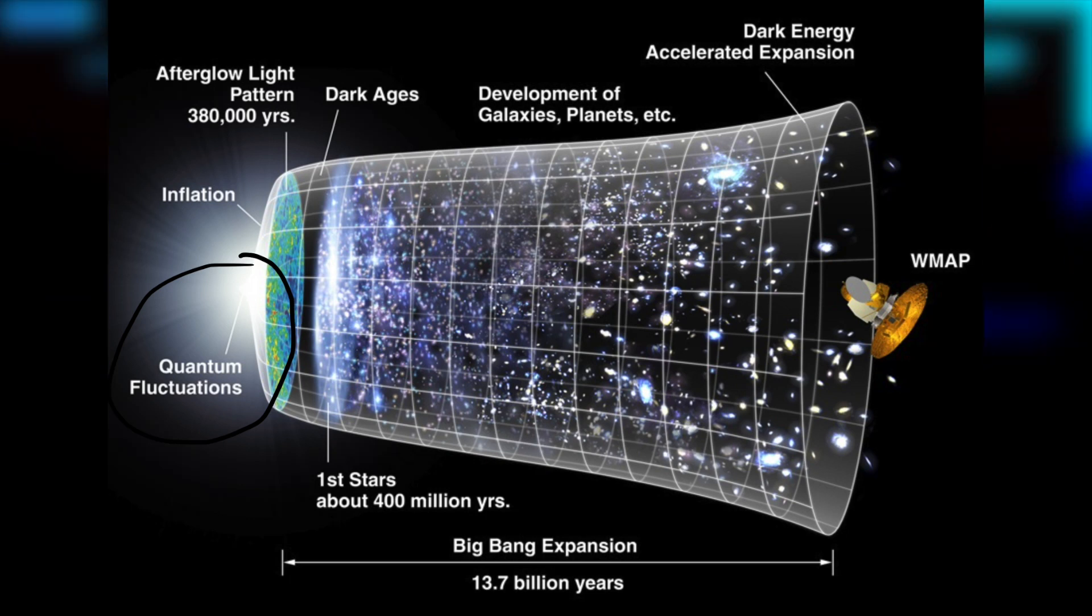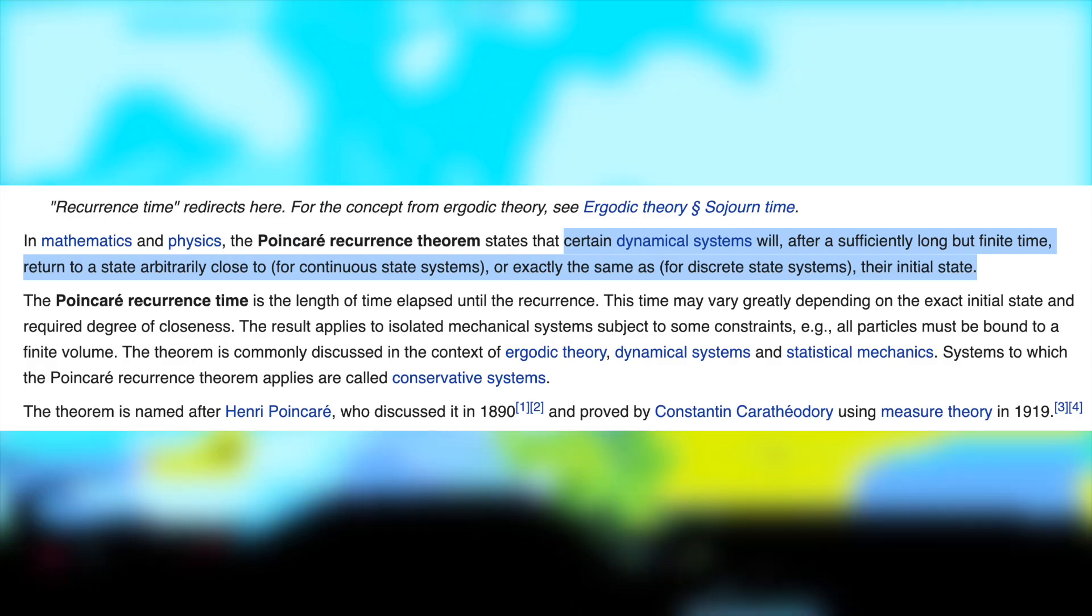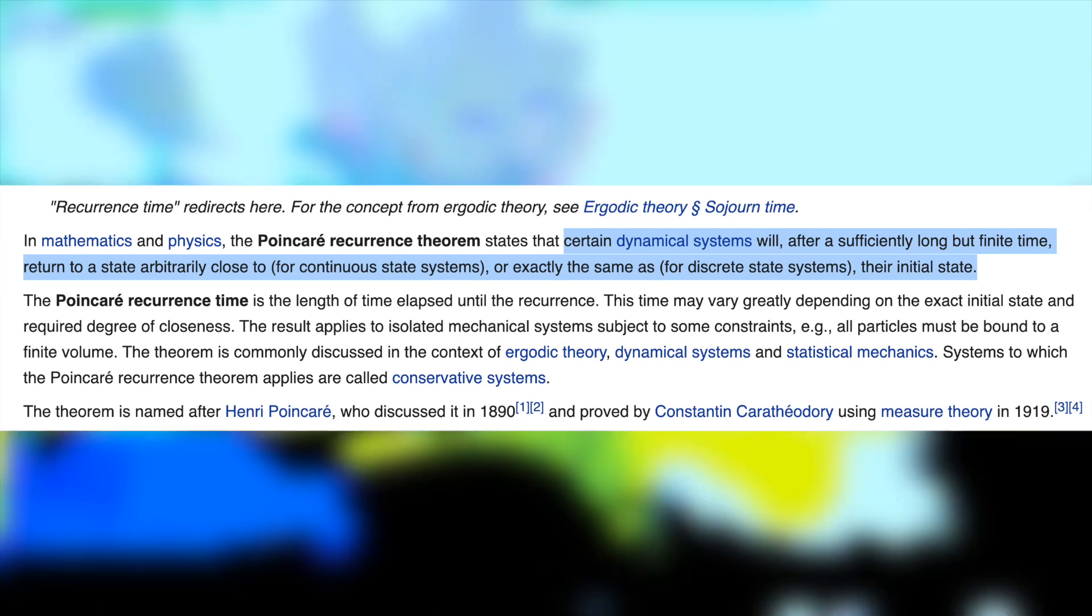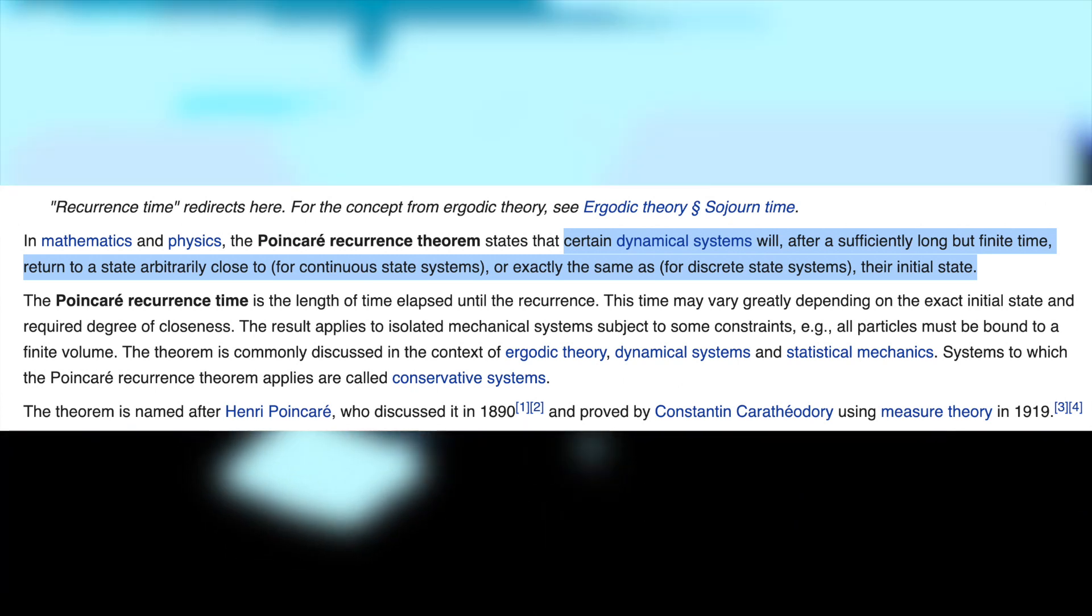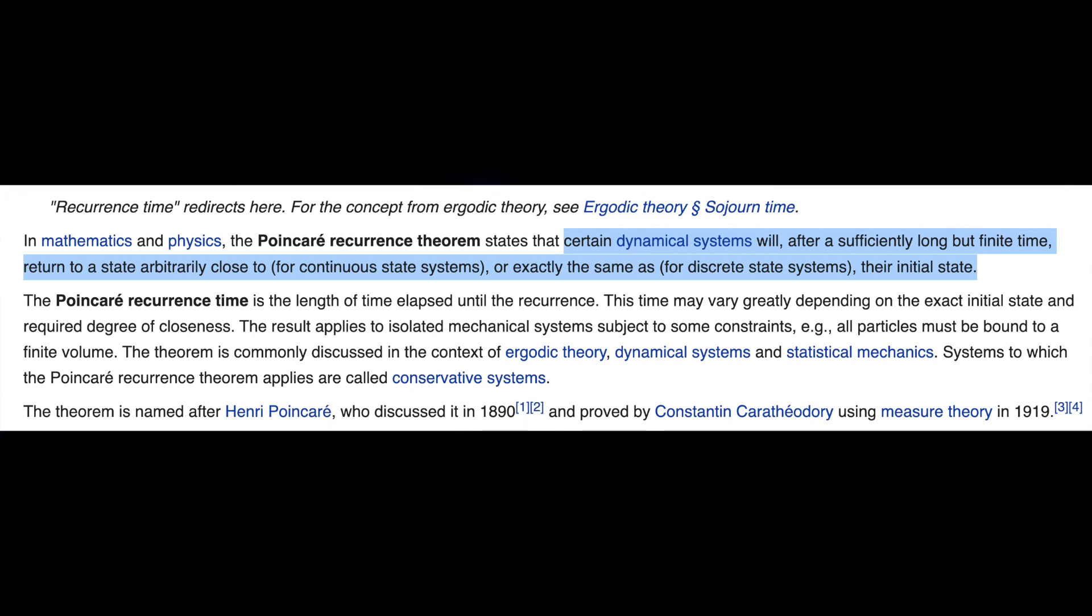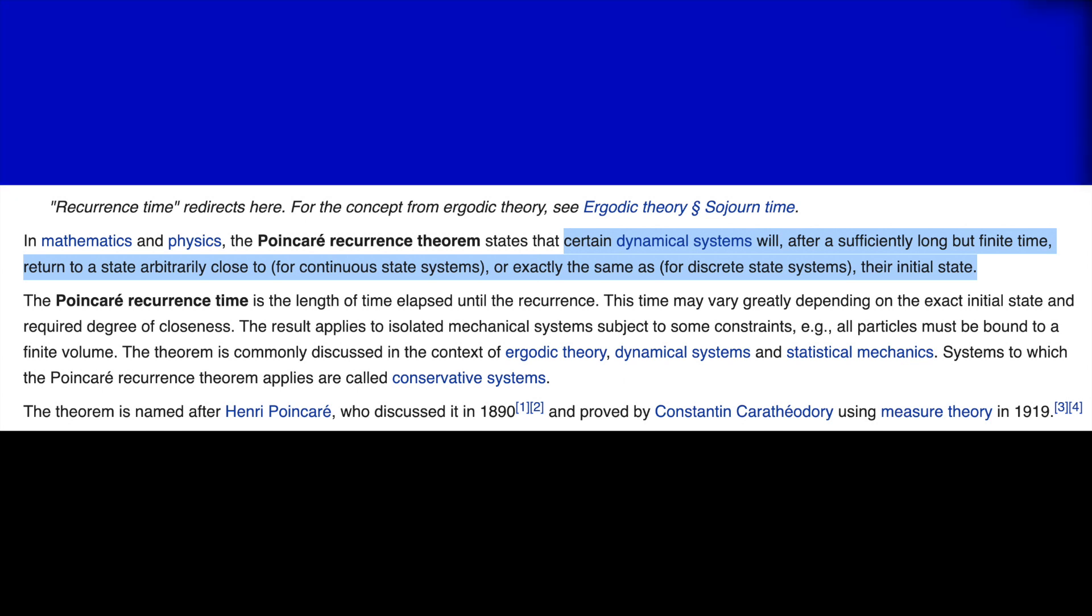In statistical mechanics, there's a principle that states that any arrangement of particles in a system will eventually find itself in that same position once again. The less likely that configuration, though, the longer it will take. This is called the Poincaré recurrence.